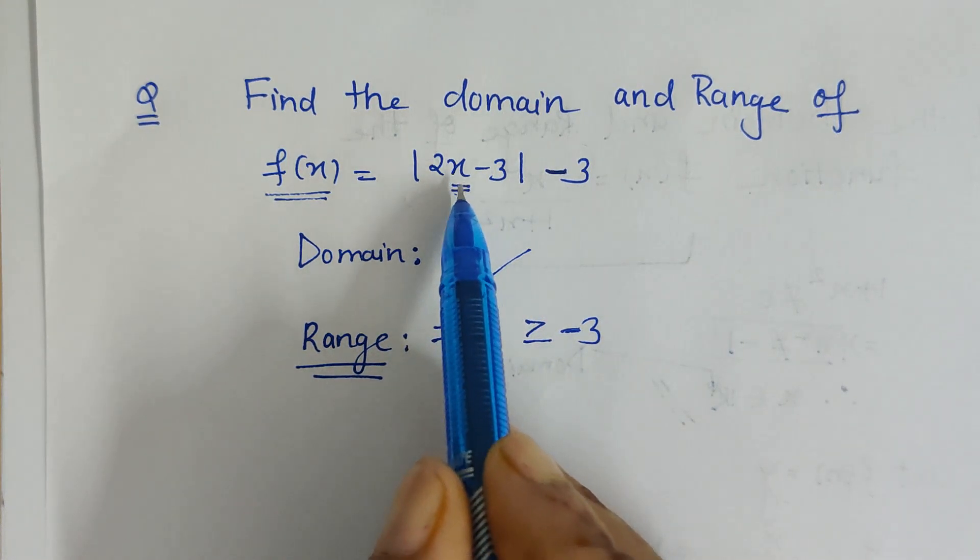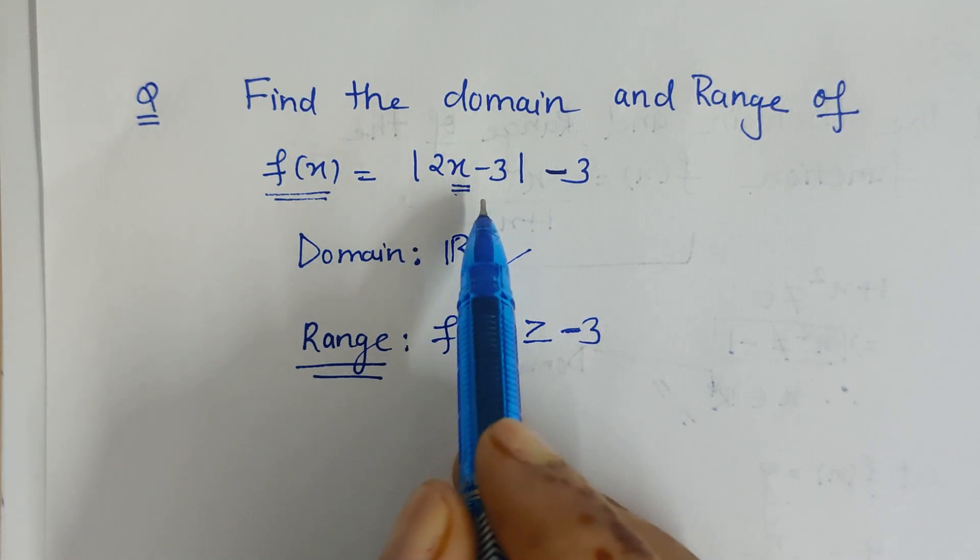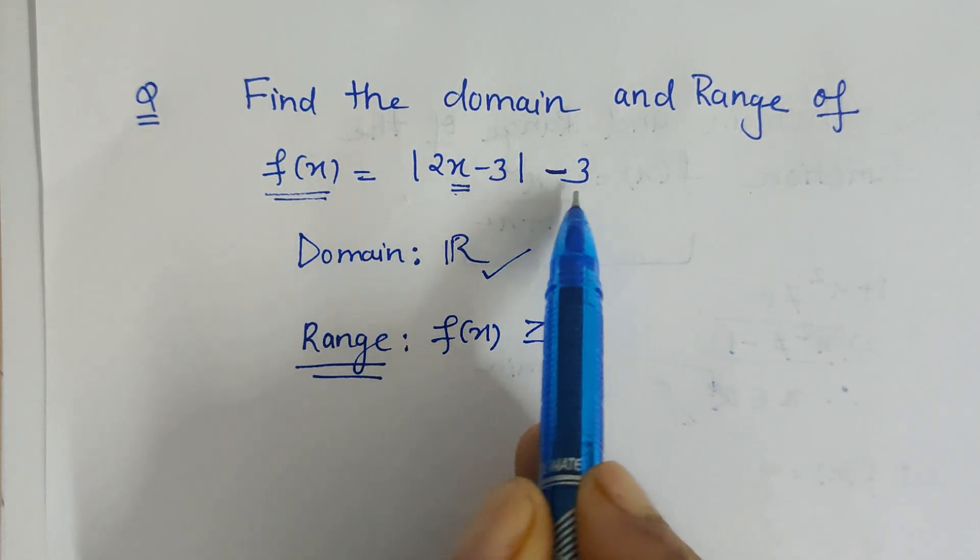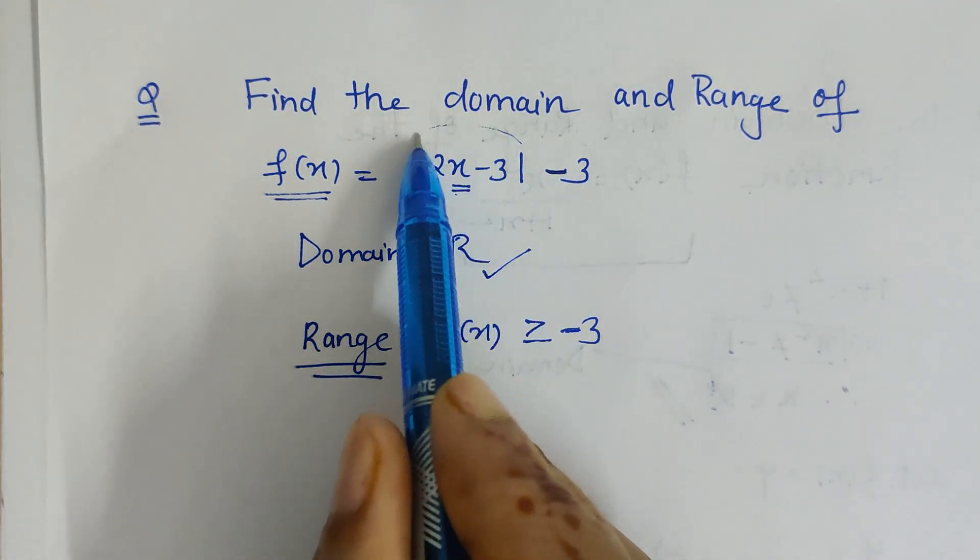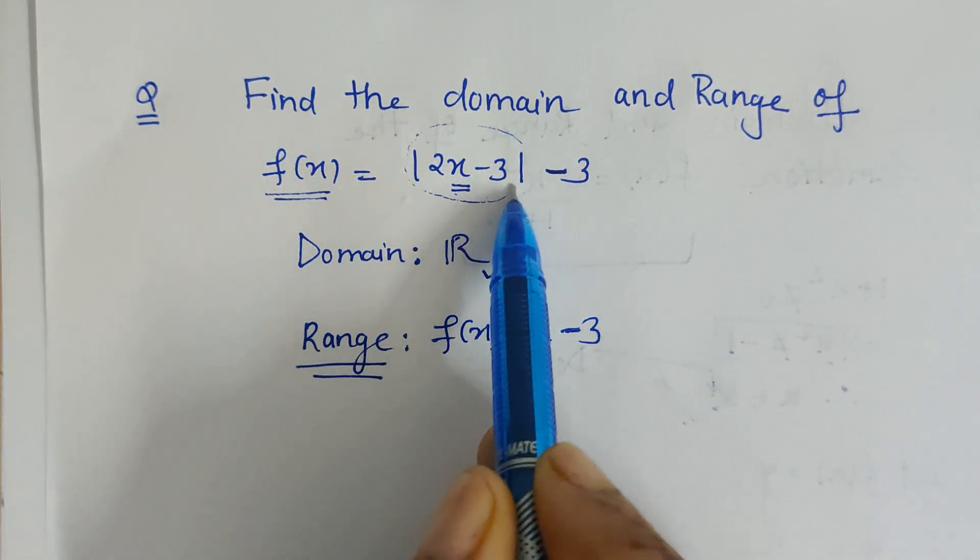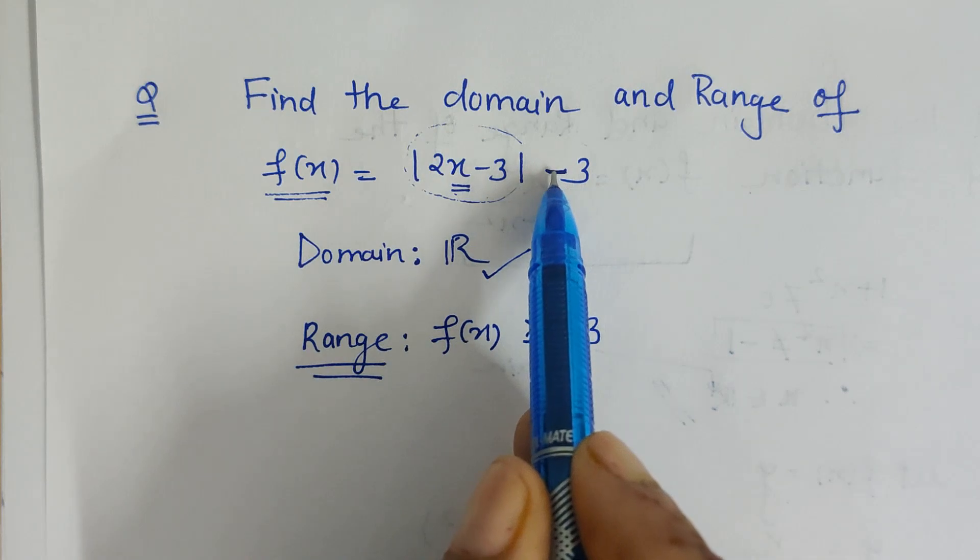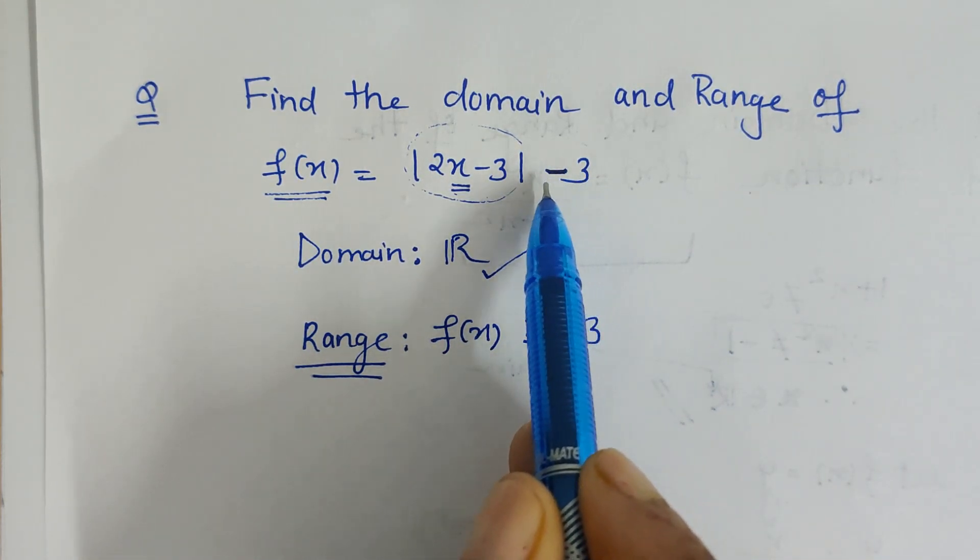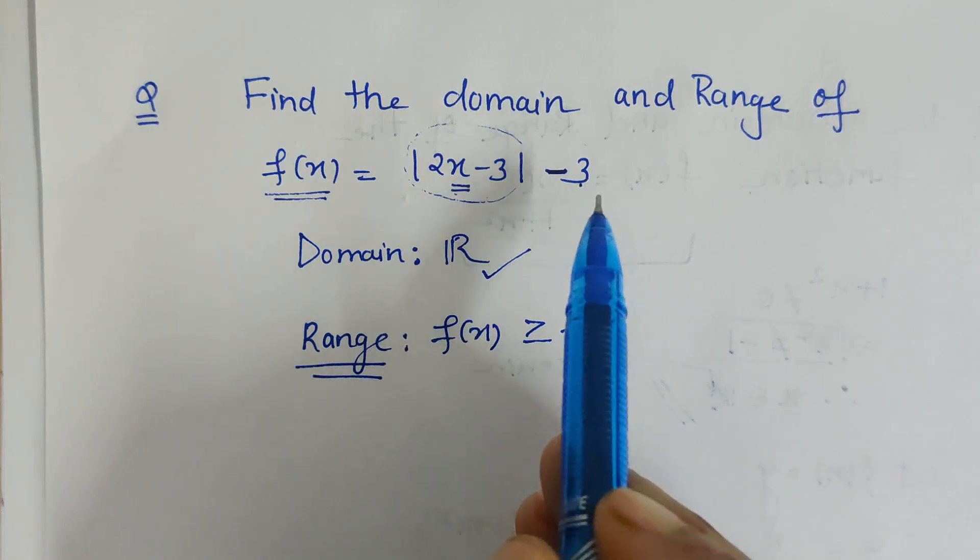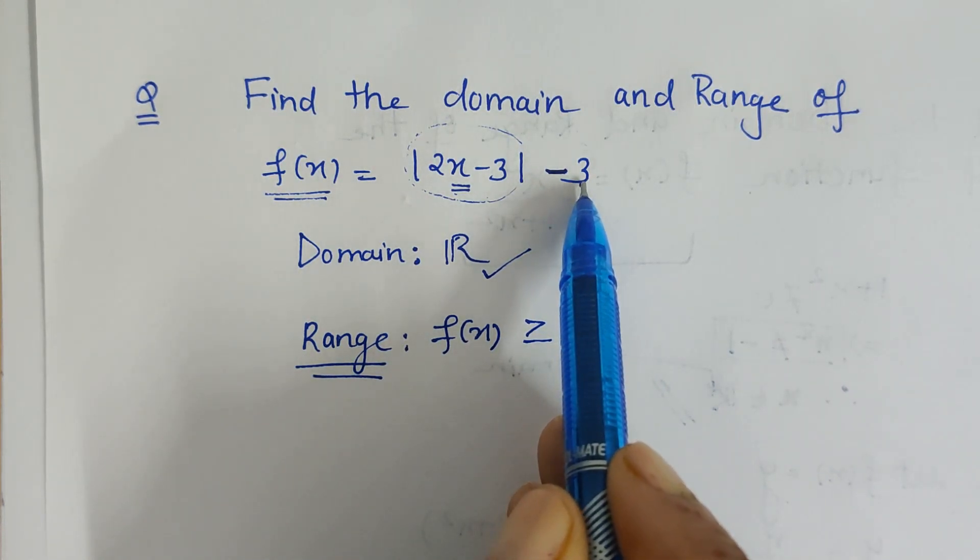Now if you put any other value in the place of x, it will always give some value which is greater than -3. Why? Because it is a mod function, it will always be a positive number. So when a positive number and -3 get subtracted with 3, it will always give something which is greater than -3.